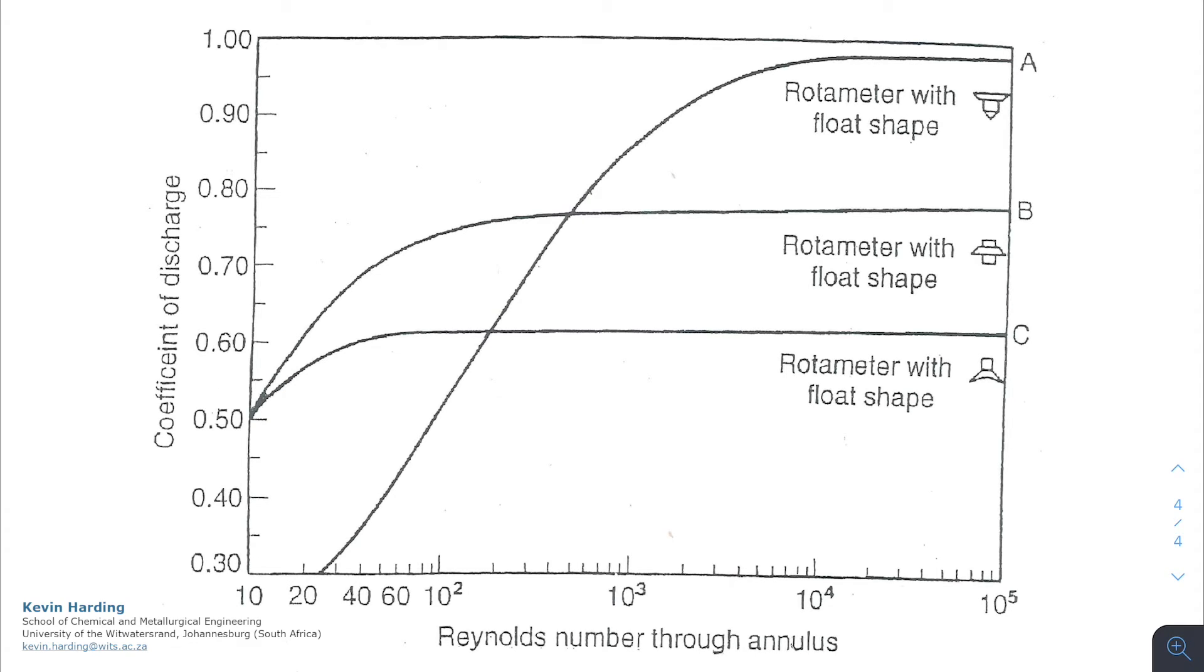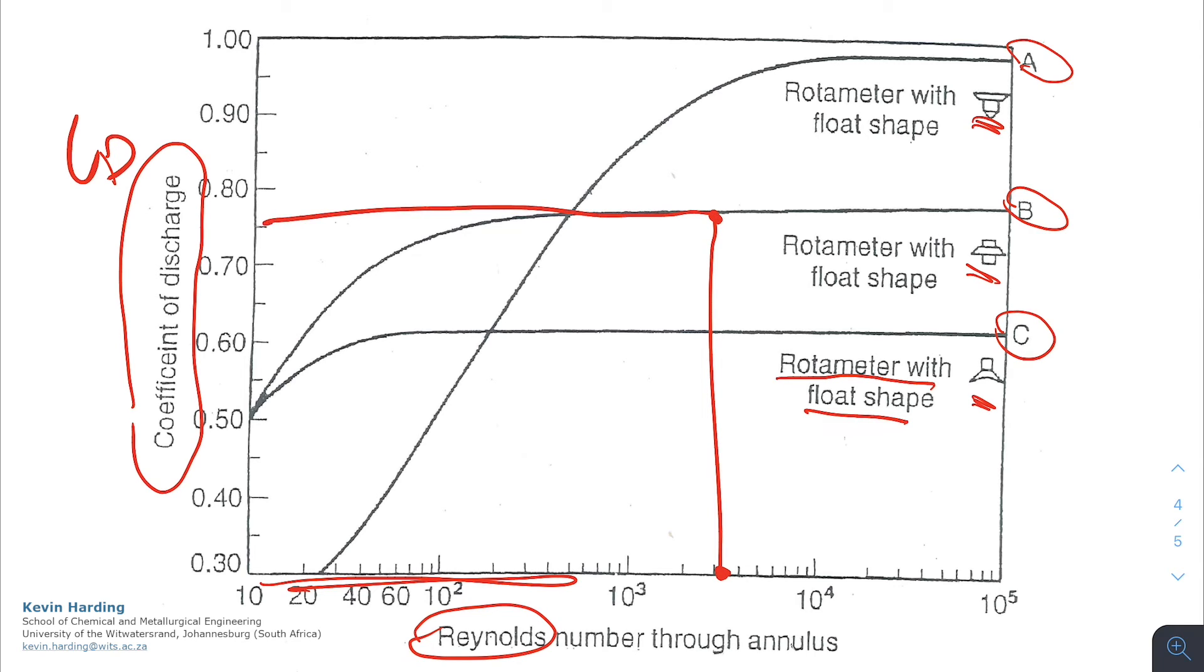This time, however, our Cd graph is a little bit simpler to use. We again have the Reynolds number on the x-axis to find the coefficient of discharge, which is our Cd value on the y-axis. However, this time we only need to look at three different scenarios where we have a rotameter with a float shape designated the letter A, B, or C, and there is a picture of each. Once you've got whether it's A, B, or C, we calculate the Reynolds number, read up to the curve, and then to the left to get our Cd.